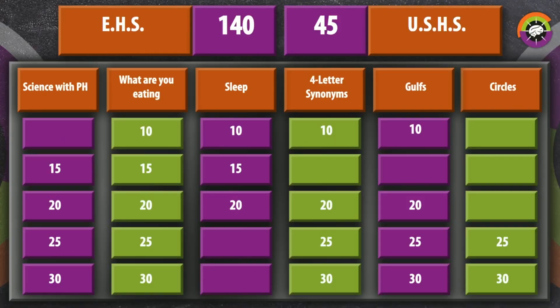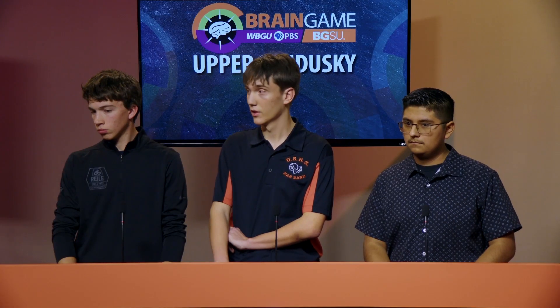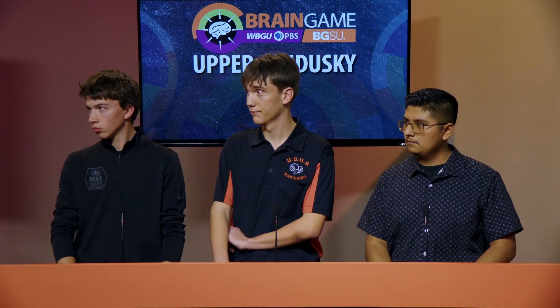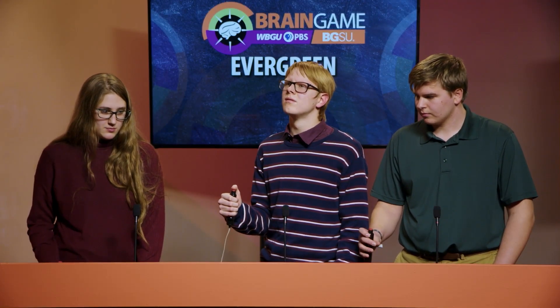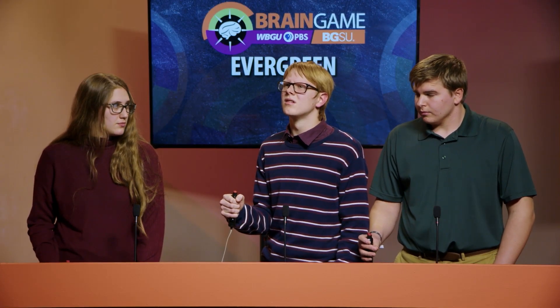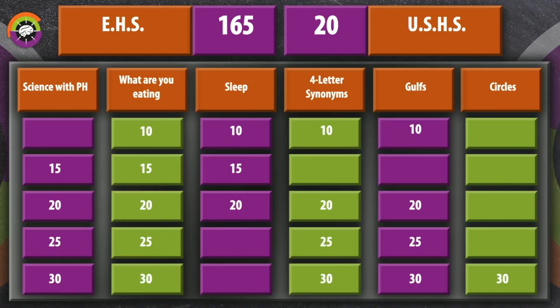Upper Sandusky in control. Circles for 25 points — what type of circles have the same center point but different diameters? Upper Sandusky answers 'similar' — incorrect. Evergreen gets the chance to steal — Caleb answers 'concentric circles,' which is correct. Evergreen in control.